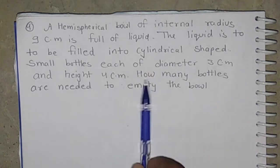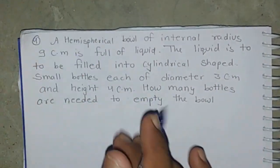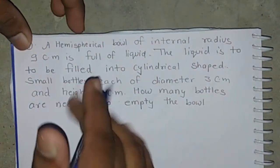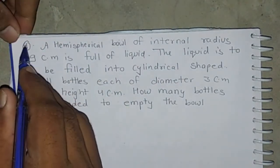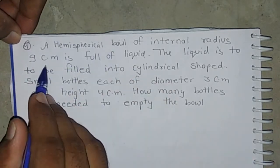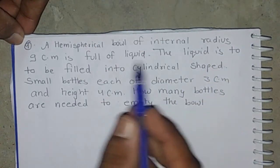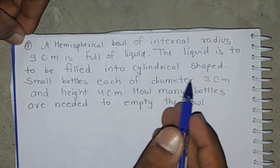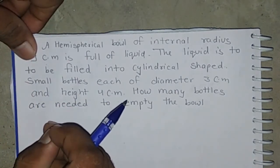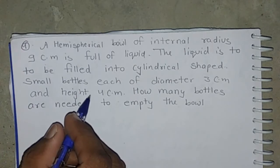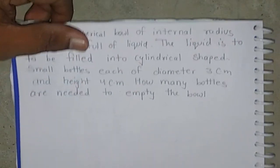After that, you start the revision of this topic. Question number 9: A hemispherical bowl of internal radius 9 cm is full of liquid. The liquid is to be filled into cylindrical shaped small bottles, each of diameter 3 cm and height 4 cm. How many bottles are needed to empty the bowl?